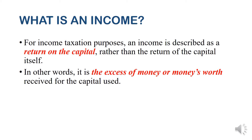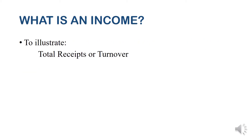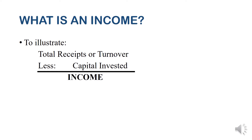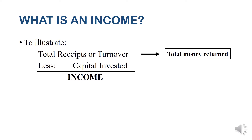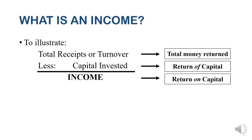To illustrate: total receipts or turnover is the total money received by the taxpayer, less the capital invested. Any excess amount is the income. The total receipts represent the total money returned, while the capital invested is the return of the capital, and the excess is the return on the capital. For example, if we invested 100,000 in a business and received 120,000, then the 100,000 is the return of capital while the excess 20,000 is the return on the capital — that excess is the income.